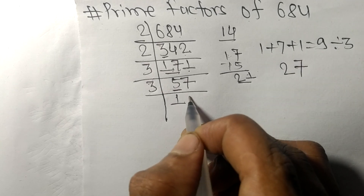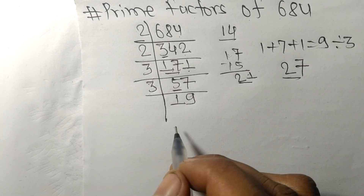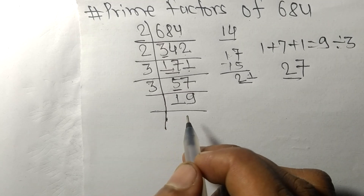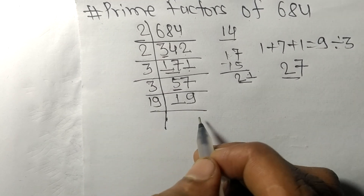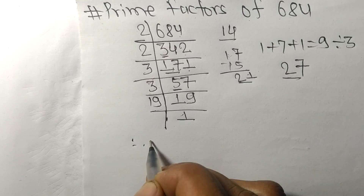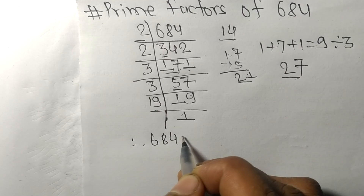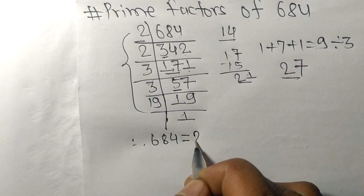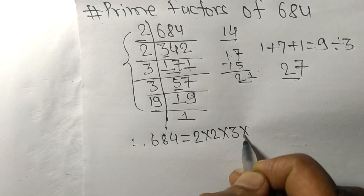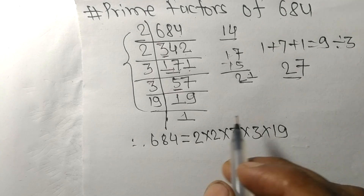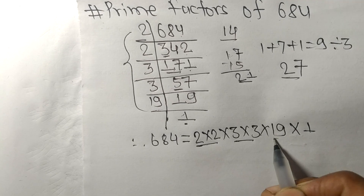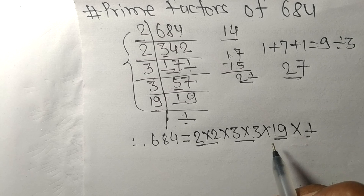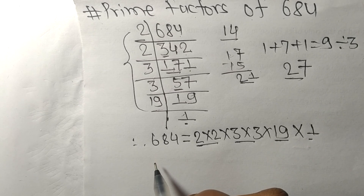So now we got 19, which is a prime number. It is divisible by 19 itself, and we get 1. Therefore, 684 equals 2 times 2 times 3 times 3 times 19. So 2, 3, 19, and 1 are the prime factors of 684. That's all for today — thanks for watching.